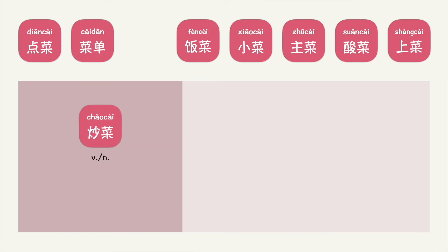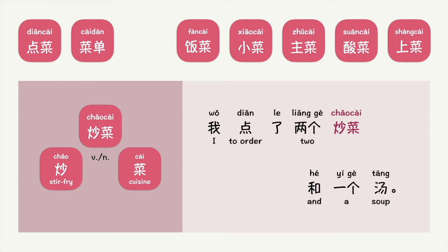炒菜 can be a verb or a noun. 炒 means to stir fry, 菜 is cuisine. Put into context, you can say: 我点了两个炒菜和一个汤。 What do you think 炒菜 means? When it's a verb, 炒菜 means to stir fry. And as a noun, 炒菜 refers to a stir fry dish. This example uses it as a noun.